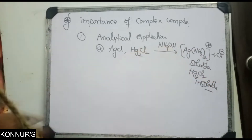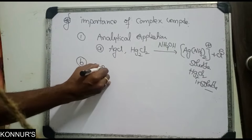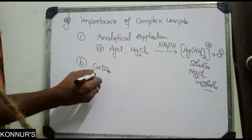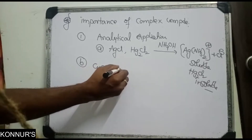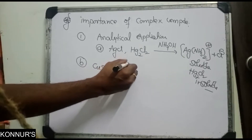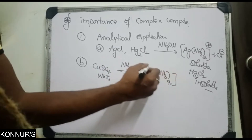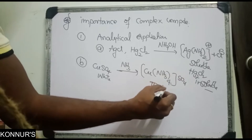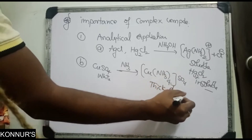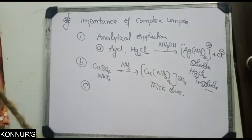So silver chloride can be easily separated from mercurous chloride. Next, anhydrous CuSO4 is white in color; when ammonia is added, you get [Cu(NH3)4]SO4, which gives a deep or thick blue complex of copper sulfate.